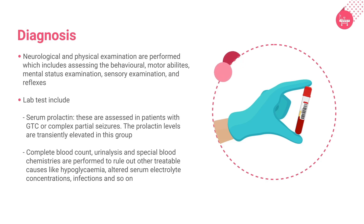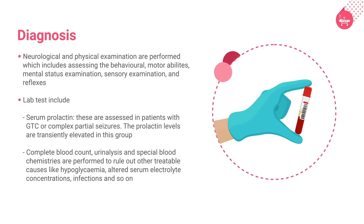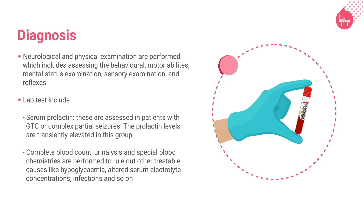A series of lab tests are performed, which include serum prolactin. These are assessed in patients with GTC or complex partial seizures, as prolactin levels are transiently elevated in this group. Complete blood count, urinalysis, and special blood chemistries are performed to rule out other treatable causes like hypoglycemia, altered serum electrolyte concentrations, and infections.